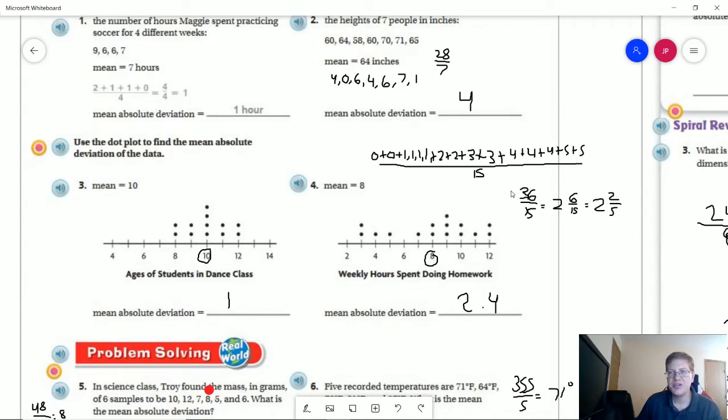So here's our total. We ended up with 36 on the top, 15 on the bottom. When we divide, we get 2 and 6 fifteenths, which reduces to 2 and 2 fifths, which reduces to 2.4 if we change it to a decimal.